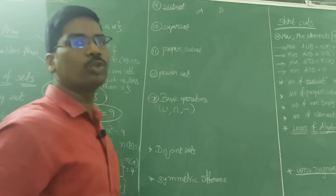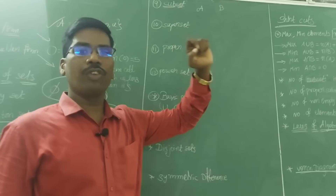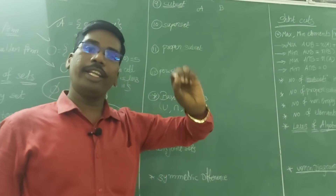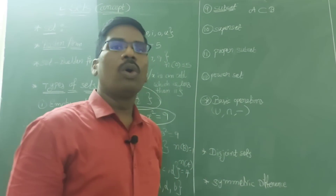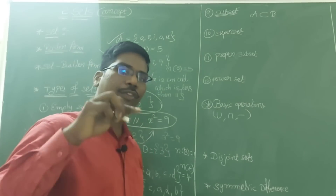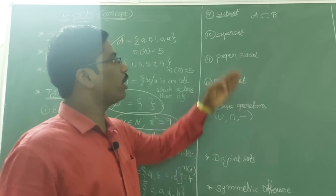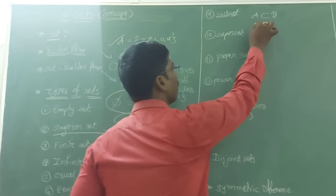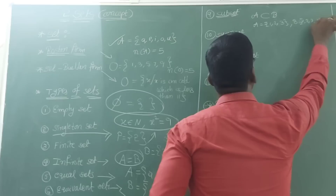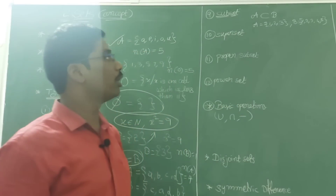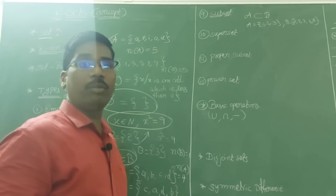Subset: if we consider two sets A and B, and whatever elements are present in A are also present in B, then A is called a subset of B. For example, A = {1, 2, 3} and B = {1, 2, 3, 4, 5} — clearly A is a subset of B. All elements of A are present in B, so A is a subset of B.